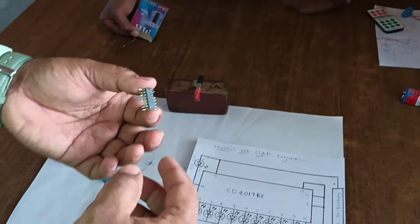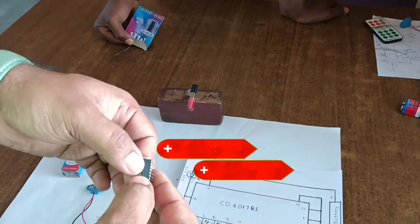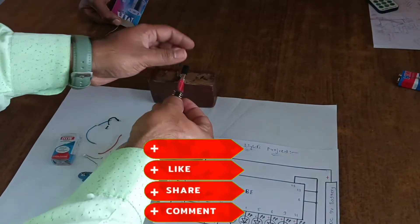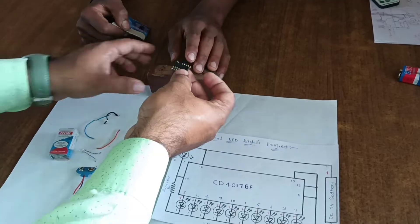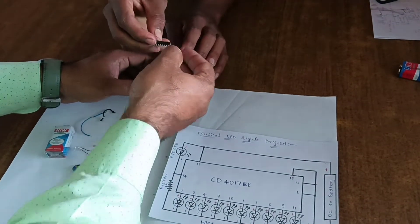Let's start the connection. Take IC. Connect the LEDs to this IC.